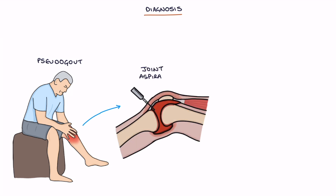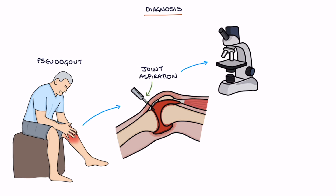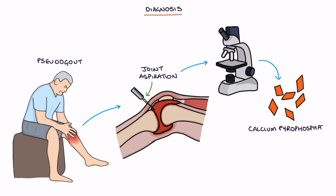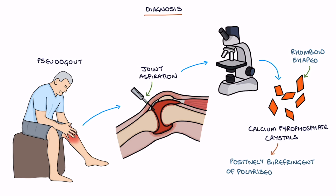Joint aspiration is used to confirm the diagnosis. Aspirated joint fluid shows calcium pyrophosphate crystals. These are rhomboid shaped and positively birefringent under polarized light. There should be no bacterial growth.